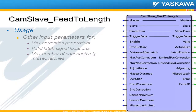There are other input parameters for the maximum correction per product. We have a max positive correction and a max negative correction — it's not good to make too big of a jump typically in a real application. There are also valid latch signal locations, which come in as sensor minimum and sensor maximum.